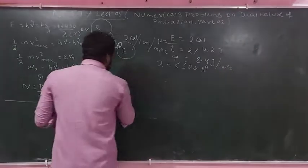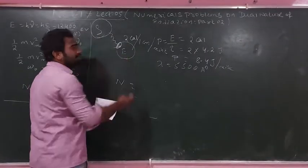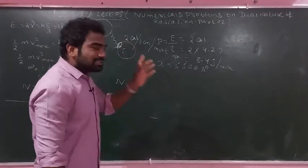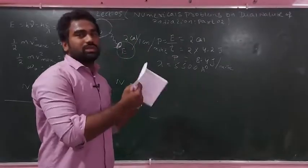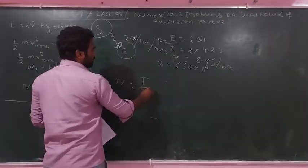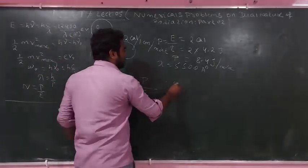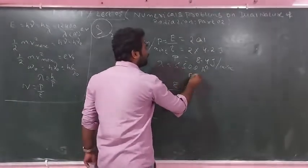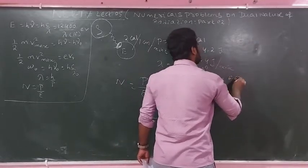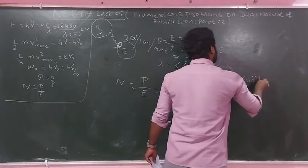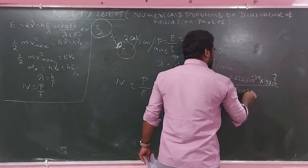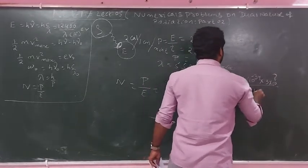The question asks how many photons are absorbed per centimetre square per minute by the Earth's surface. The photon formula is N = power/energy. Power is 8.4 J/min. The energy per photon is E = hc/λ, where h = 6.626×10⁻³⁴, c = 3×10⁸ m/s, λ = 5500 angstrom. Convert angstrom to metres by multiplying by 10⁻¹⁰.